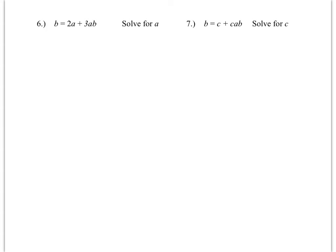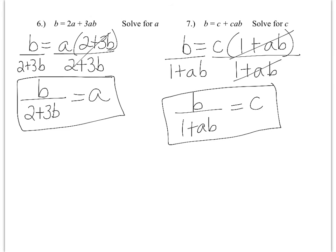Now try problems 6 and 7 completely on your own. For problem 6, pull out the A and divide by what's left — that gives the correct answer. For problem 7, when you pull out the C, remember that term doesn't cancel — you divide C by C to get 1, leaving AB. So divide by 1 plus AB for your final answer. If you are struggling or getting these wrong, please seek help rather than just moving along.